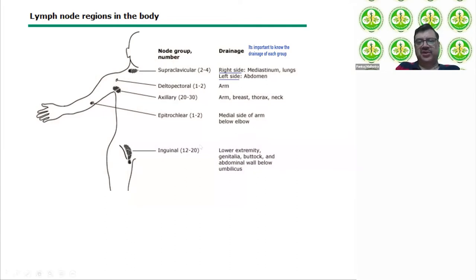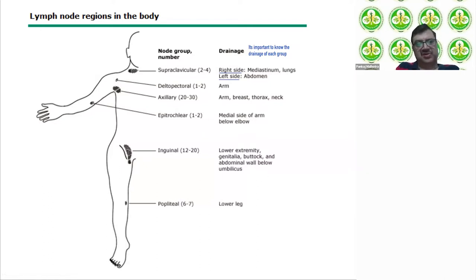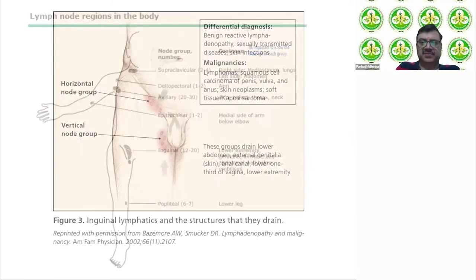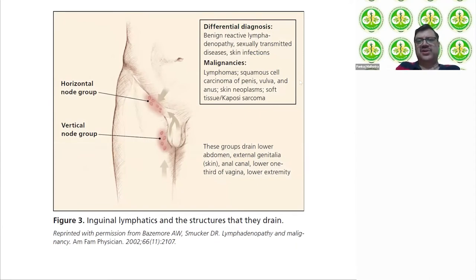The inguinal region drains the lower extremities, genitalia, buttock, and abdominal wall below the umbilicus. The popliteal node is rarely felt in the clinic but is important. Differentials for inguinal nodes range from reactive lymphadenopathy — since inguinal lymph nodes are a common finding even in asymptomatic persons — to lymphomas, squamous cell carcinoma of the penis, vulva, or other neoplasms.